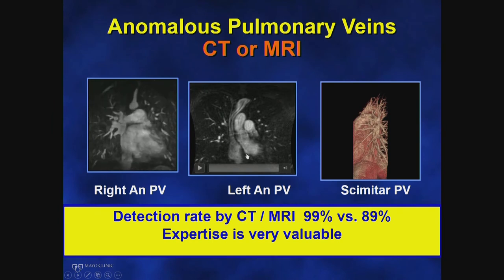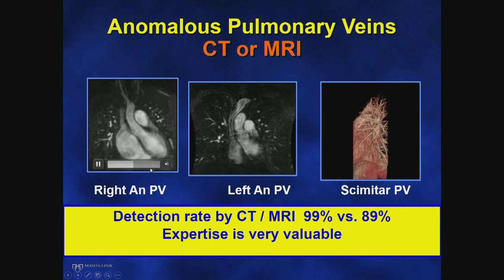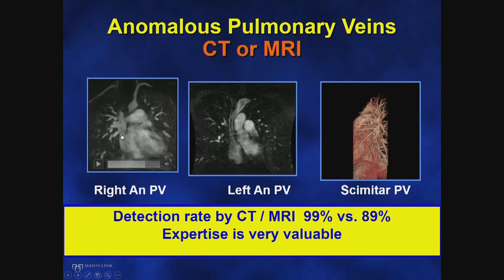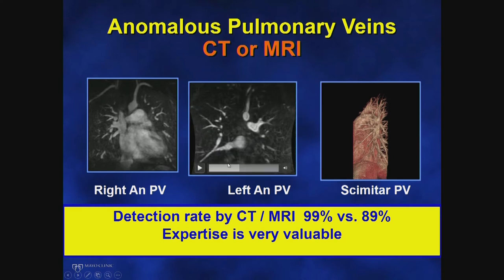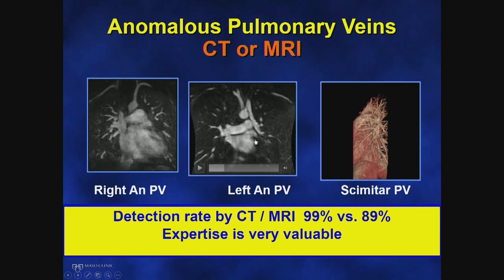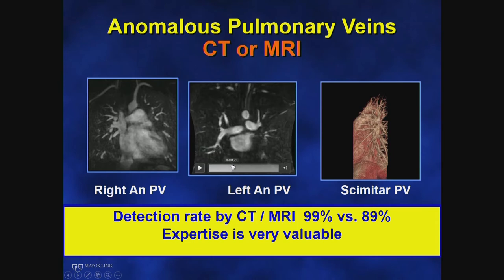Anomalous pulmonary venous connections can also be identified on CT scan and MRI. On MRI imaging you can see an anomalous right pulmonary vein emptying into the SVC, and all anomalous left-sided veins can also be identified, showing a vein draining upward through a vertical vein connecting into the SVC.